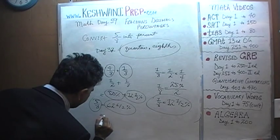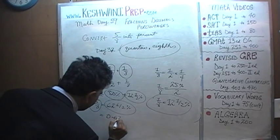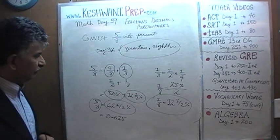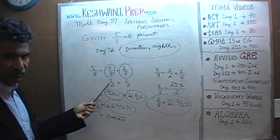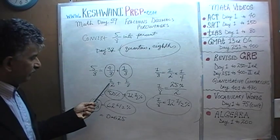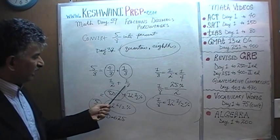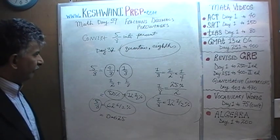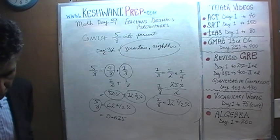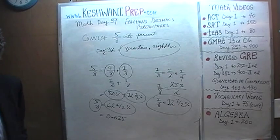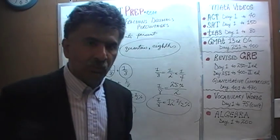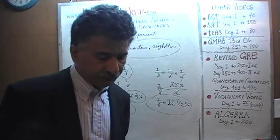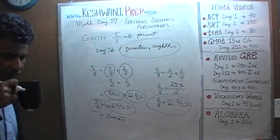Five eighths is 62 and a half percent. If they ask us to express it in decimal, it's going to be 0.625, because a half is 0.5 and one eighth is 0.125 — so 0.5 plus 0.125. The question was to convert 5/8 into its equivalent decimal and percentage. We have done so. Let's move on to the next one.